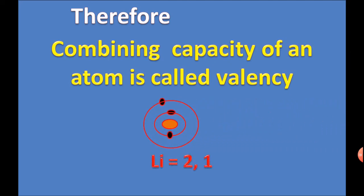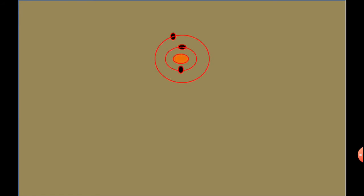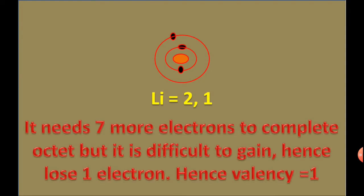Lithium has electronic configuration 2,1. Its combining capacity is 1. It needs 7 more electrons to complete the octet, but it is difficult to gain that many. Hence, it loses 1 electron instead. Therefore, the valency of Lithium is equal to 1.